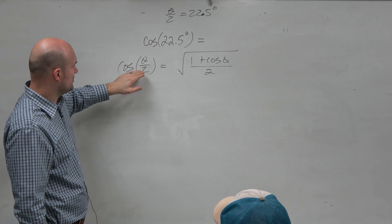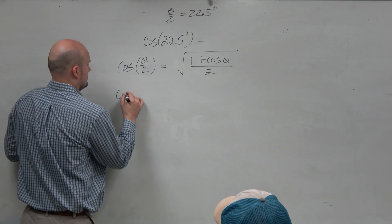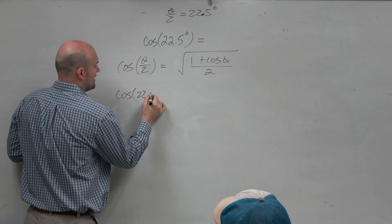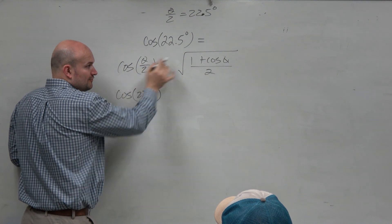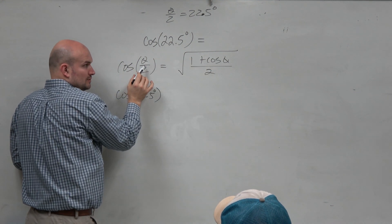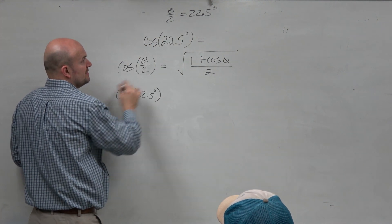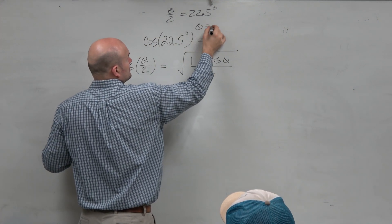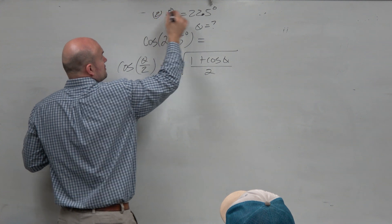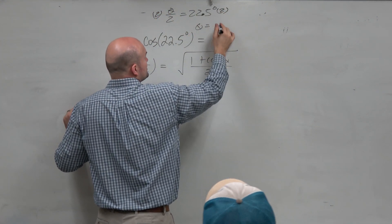Now, the problem is the formula. So here's cosine of 22.5. But that's the half angle. The formula doesn't use the half angle. The formula uses the real angle. So if theta over 2 is 22.5, then what is theta? 45. Right. So multiply by 2 on both sides, and you get 45 degrees.